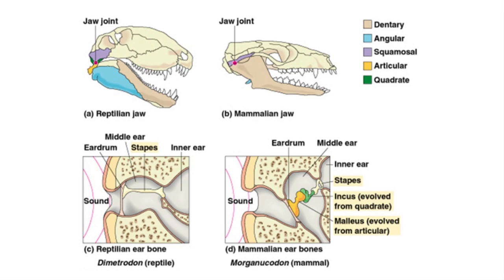In early synapsid reptiles and other tetrapods, the middle ear cavity is an air-filled cavity between the tympanic membrane and the inner fluid-filled ear cavity. The inner ear cavity is separated into the bony labyrinth, which controls balance, and the membranous labyrinth, which controls hearing.